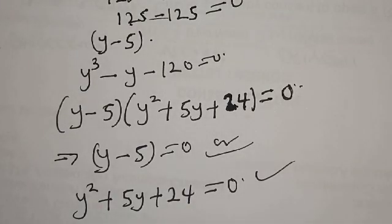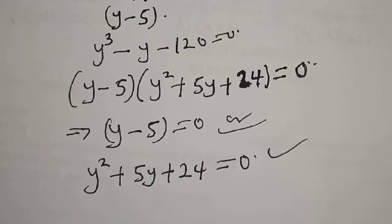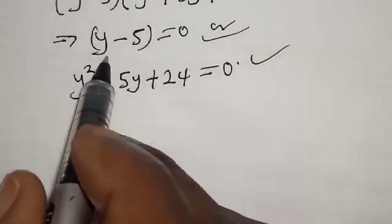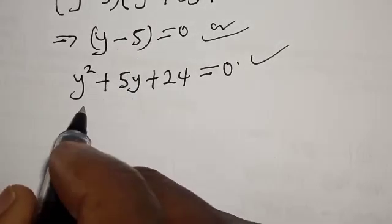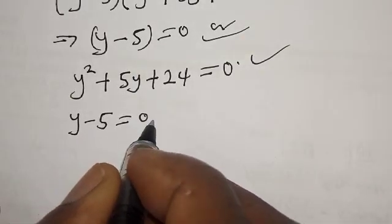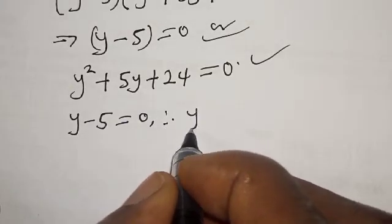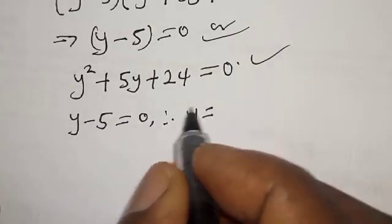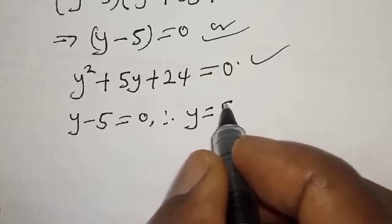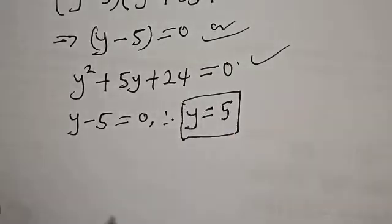From the first case, from y minus 5, we have y minus 5 equal to 0. Therefore y will be equal to 5, since minus 5 crossing to the other side becomes plus 5.